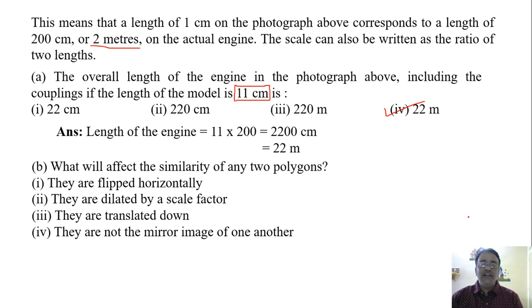Now the second question, what will affect the similarity of any two polygons? They are flipped horizontally, they are dilated by a scale factor, they are translated down, they are not the mirror image of one another. In this the last one will affect the similarity of any two polygons. They are not the mirror image of one another.